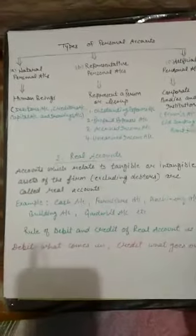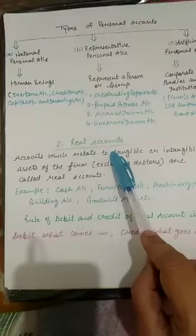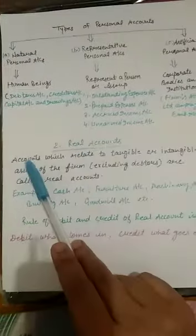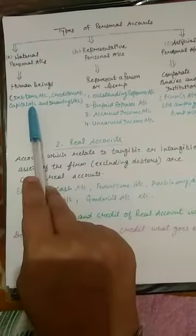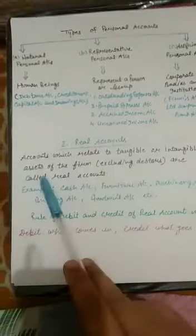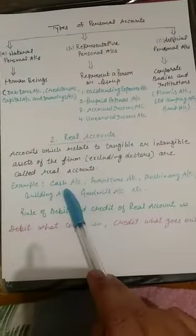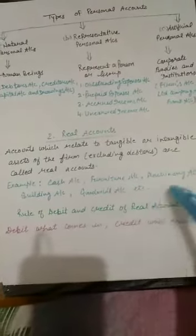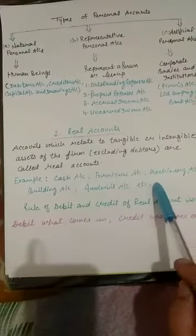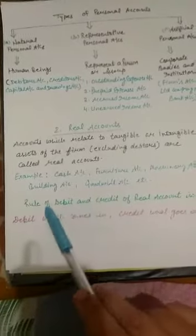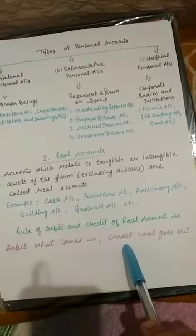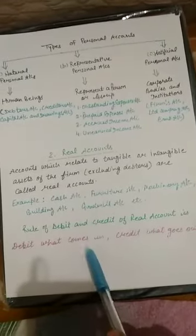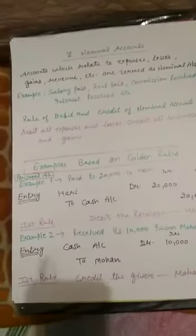Next is the real account, which is the first part of impersonal accounts. Real accounts relate to tangible or intangible assets of the firm, excluding debtors. Examples include cash account, furniture account, machinery account, building account, and goodwill account. The second golden rule for real account is: debit what comes in, credit what goes out. Whatever comes into the firm will always be debited, and whatever goes out will always be credited.